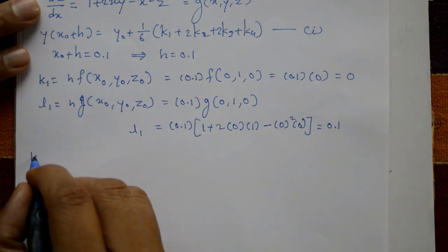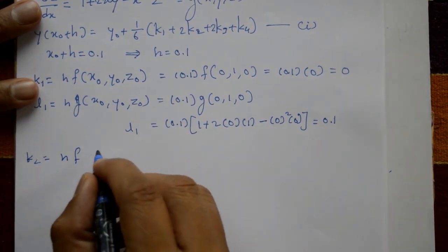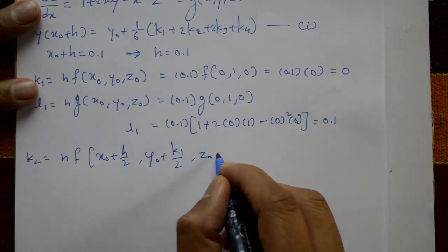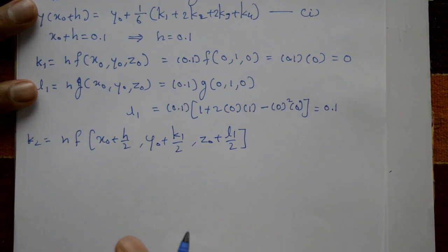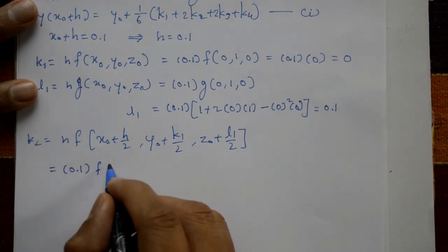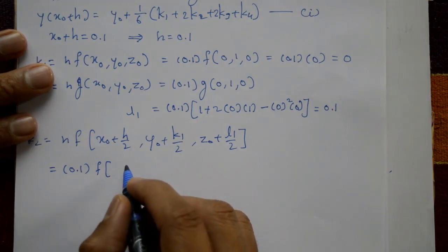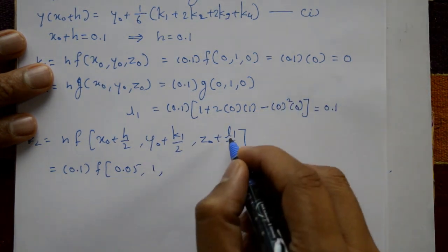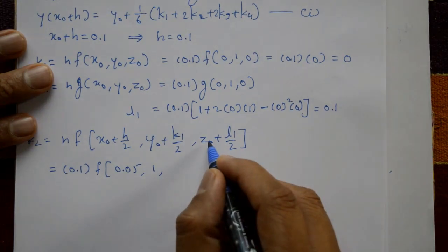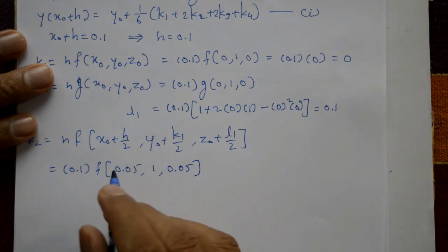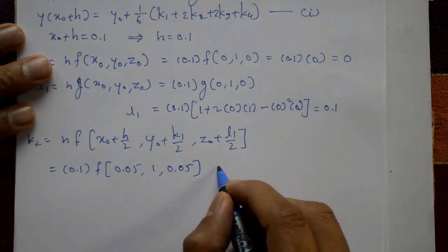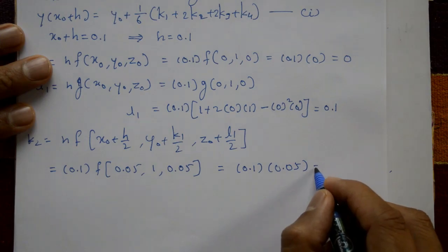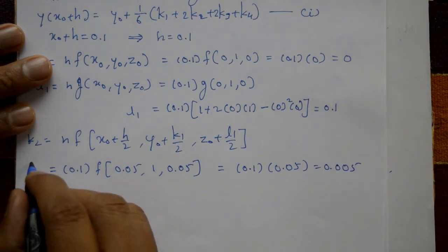Next, k2 = h · f(x₀ + h/2, y₀ + k1/2, z₀ + l1/2) = 0.1 × f(0.05, 1, 0.05). Since f = z only, k2 = 0.1 × 0.05 = 0.005.